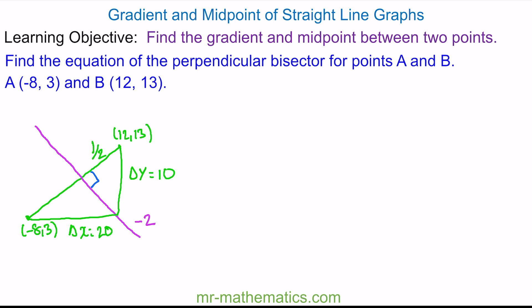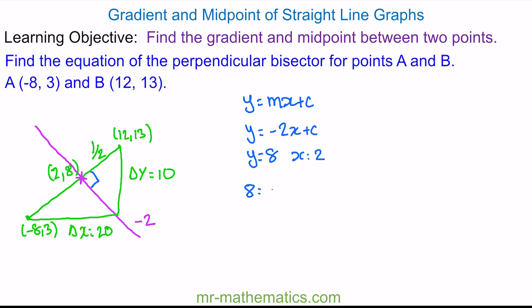We can put this into the equation of a straight line, y = mx + c. We know the gradient is -2, so y = -2x + c. We need a point that lies along the pink line, which is the midpoint of the green line segment. Since the change in x is 20, we add 10 to -8 to get 2. And the change in y is 10, so we add 5 to 3 to get 8. So when y = 8, x = 2. Substituting these values: 8 = -2(2) + c, so c = 12. The equation of our perpendicular bisector is y = -2x + 12.